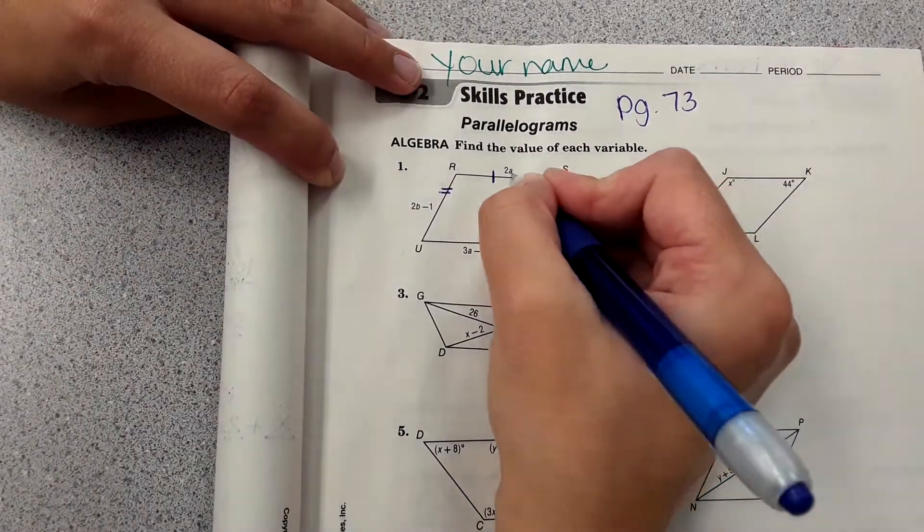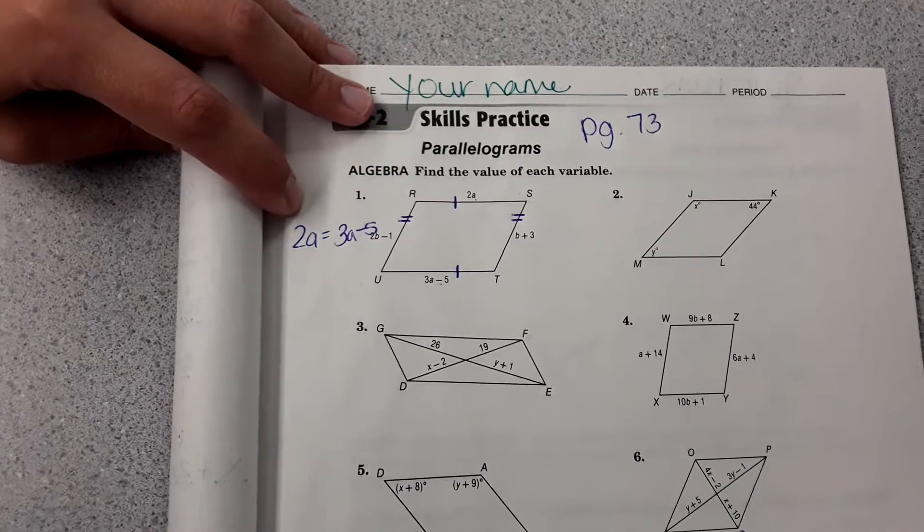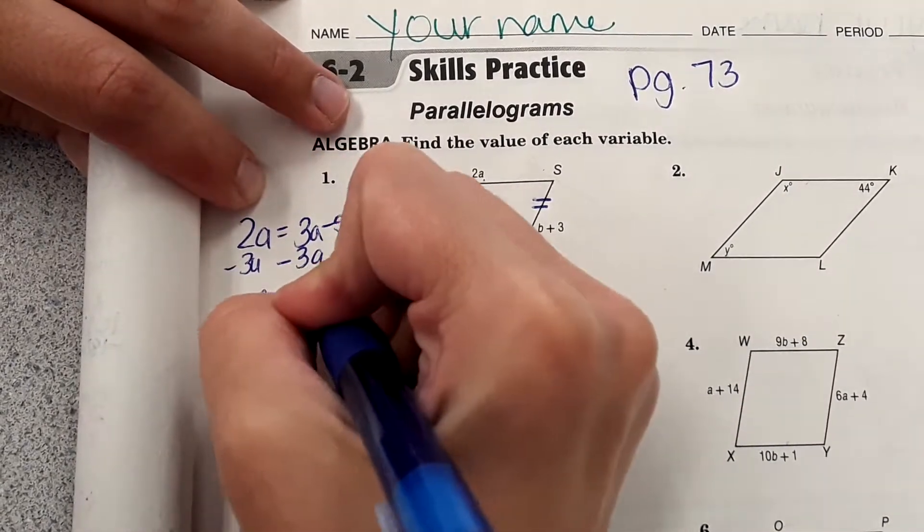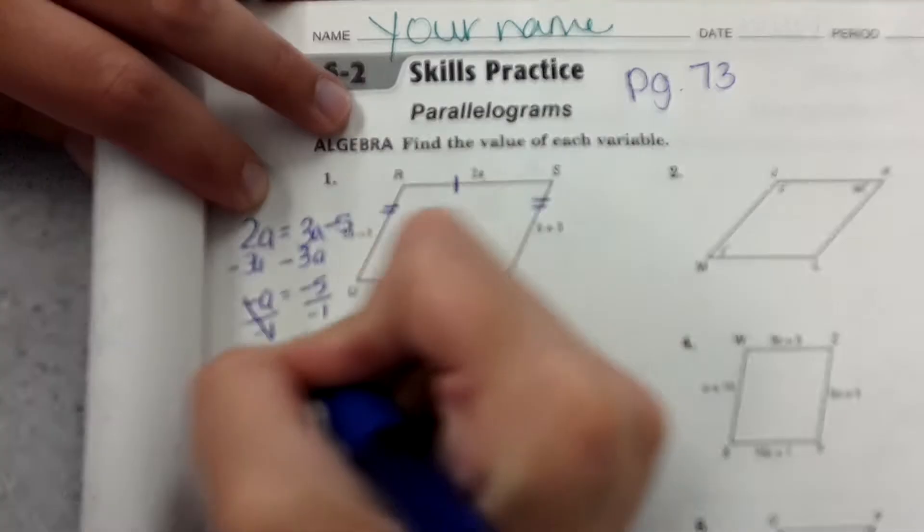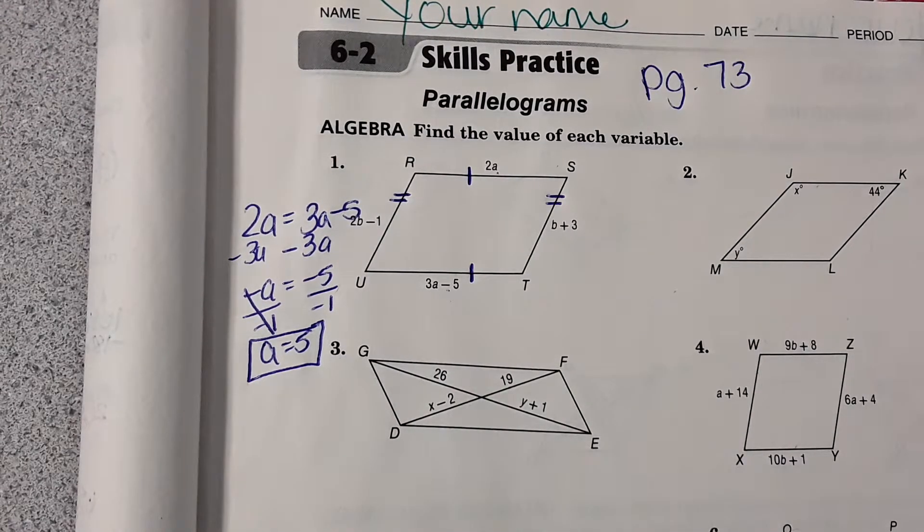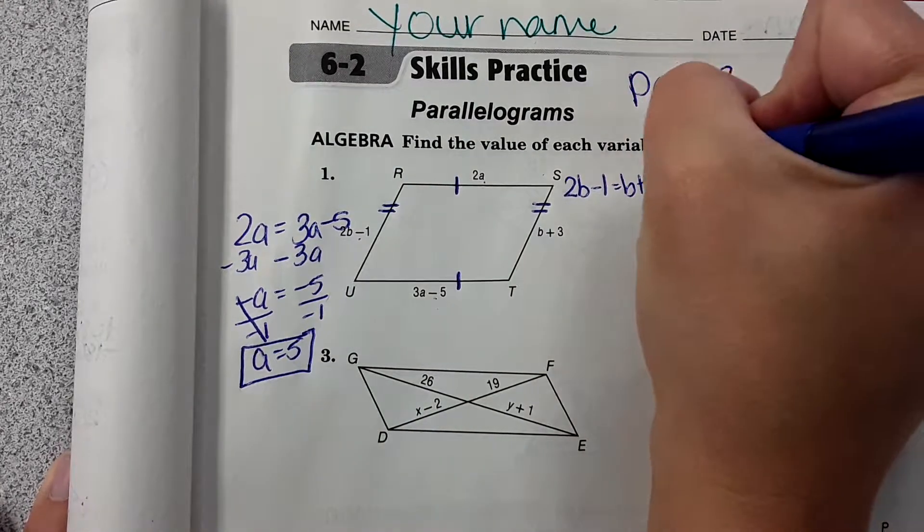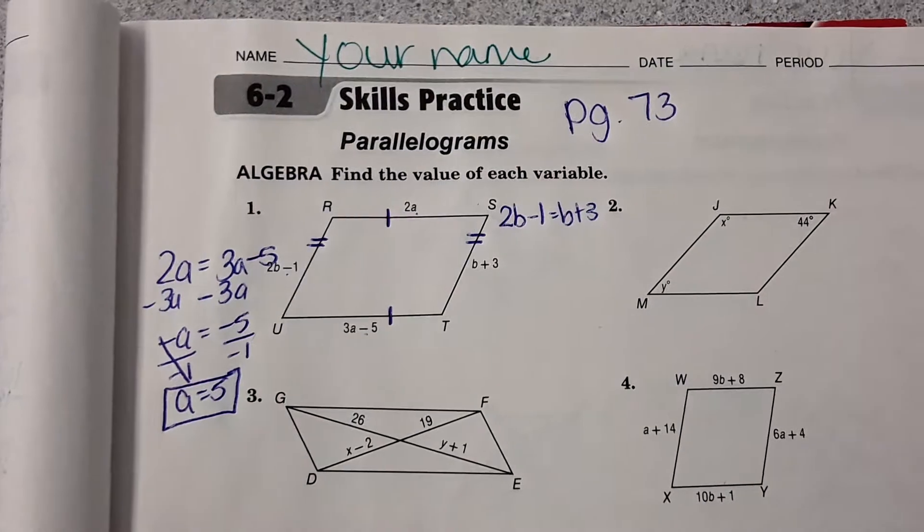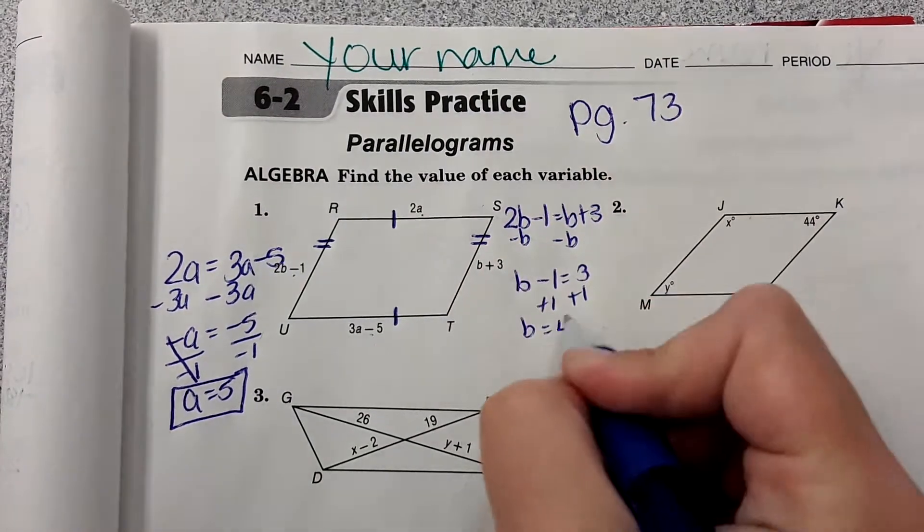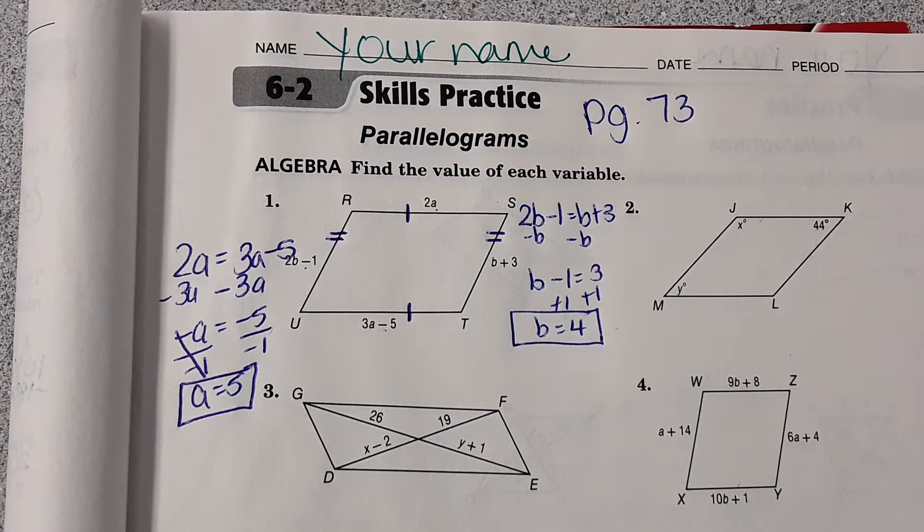So I'm going to solve for a first. I'm going to put 2a equal to 3a minus 5. Then I'm just going to solve the equation. Then once I have a, I'm going to solve for b, just setting these two expressions equal: b minus 1 equals b plus 3. And b equals 4. In this case, they're just asking you to solve for the variable. They don't want you to plug it back in and find side length, so we're done.